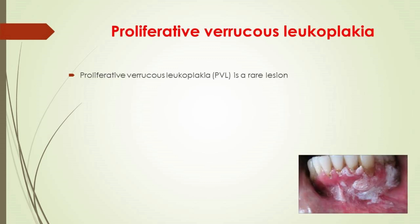Proliferative verrucous leukoplakia (PVL) is a rare lesion. In the early stage, it is similar to conventional leukoplakia both clinically and histopathologically, but in the advanced stage it appears as verrucous carcinoma. PVL is classified as a potentially malignant lesion in the oral cavity. The lesion initially develops as focal hyperkeratosis, gradually progressing to form an exophytic multifocal lesion, characterized by four phases: focal early development, geographic expansion over time, development of a verrucoid surface, and malignant transformation.